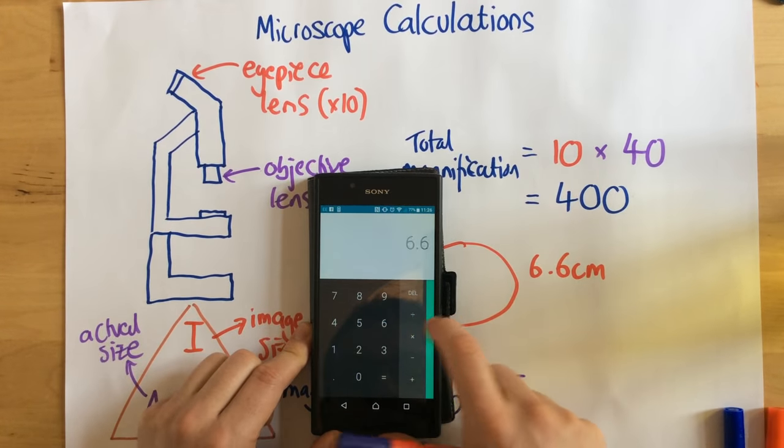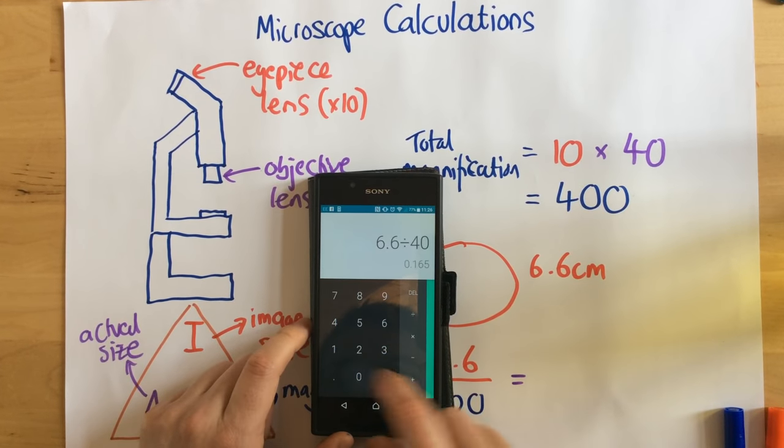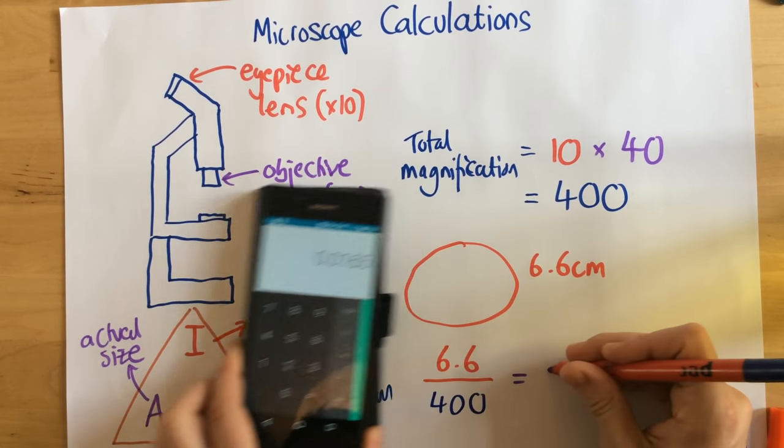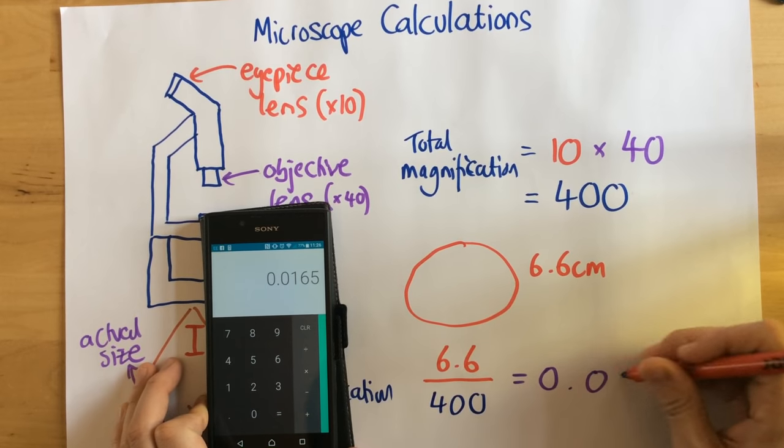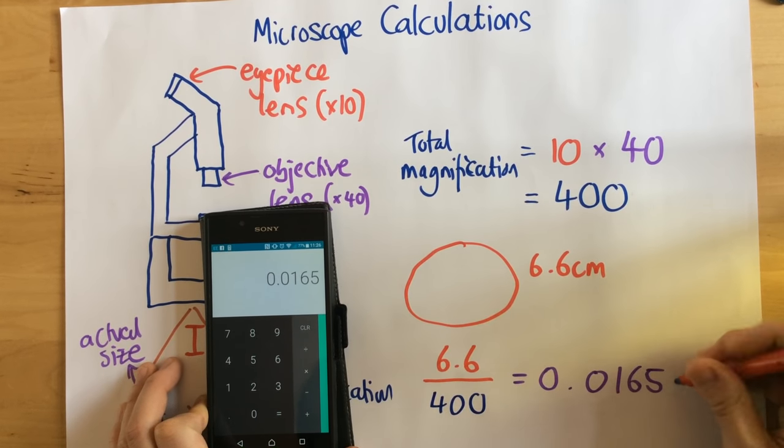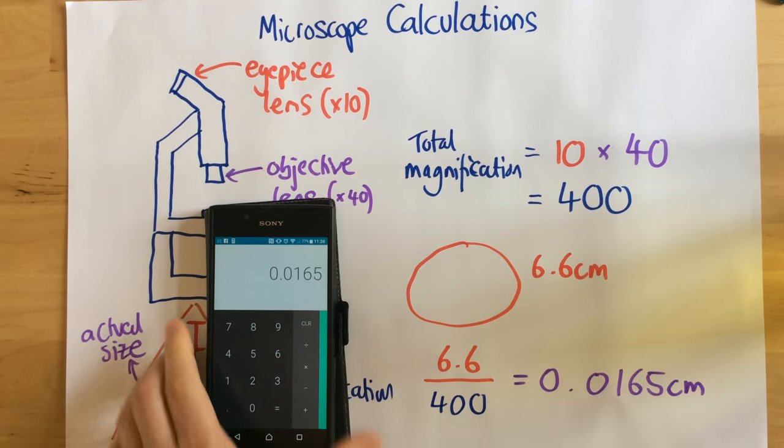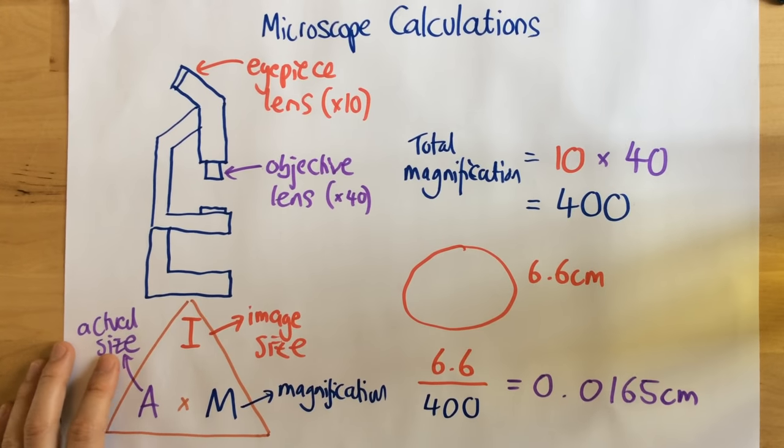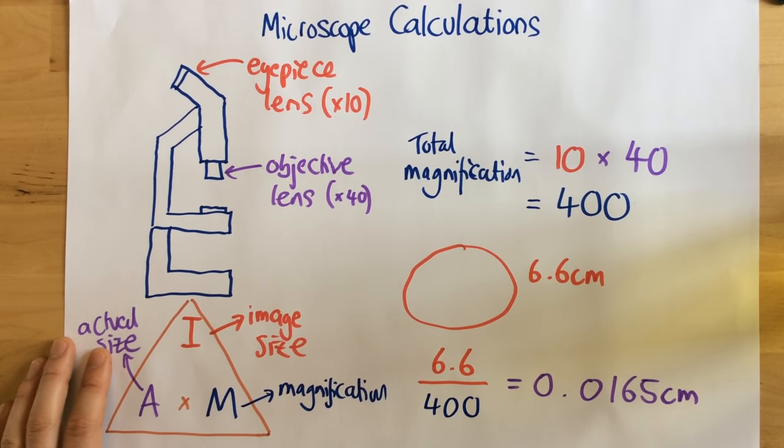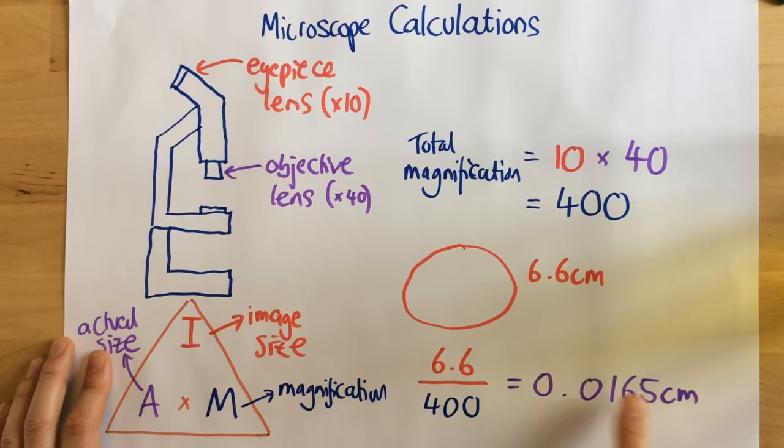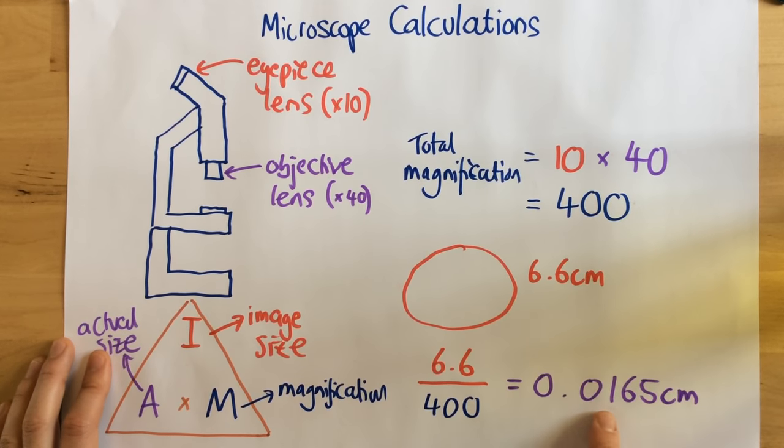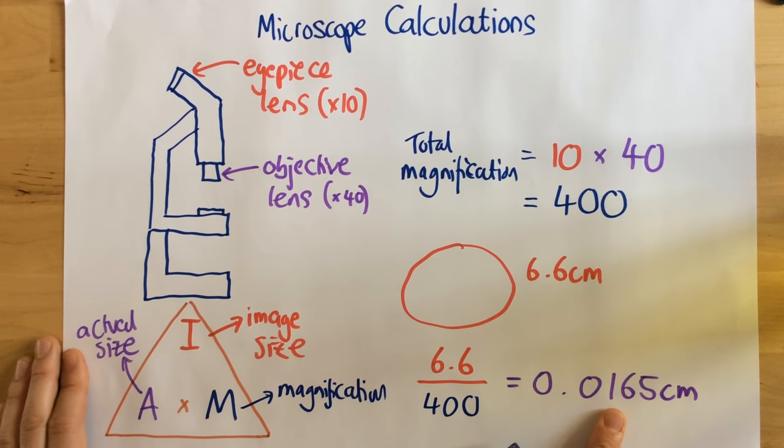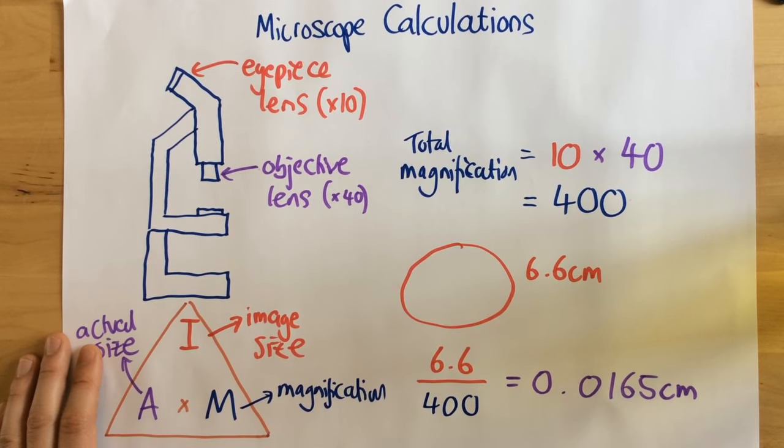So then I just need to do this on a calculator, 6.6 divided by 400, which equals 0.0165 centimetres. Now, what they might ask you to do, probably ask you to do, is you might have to convert this to a different unit, for example, micrometres. But I'm going to show that in a different video.